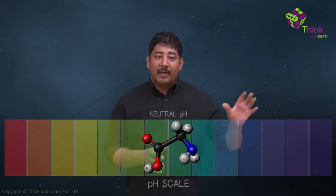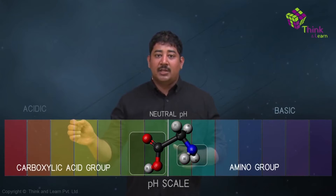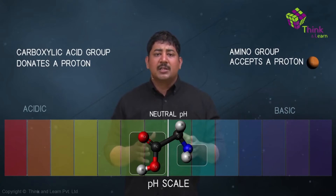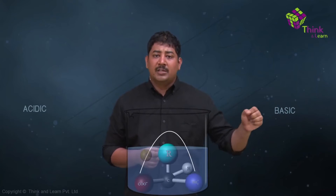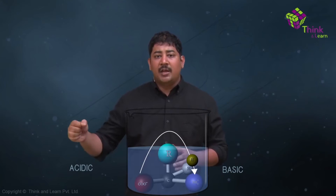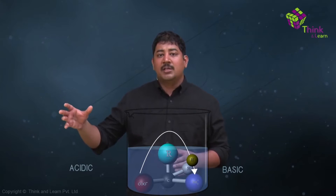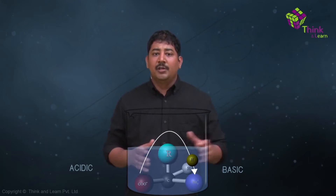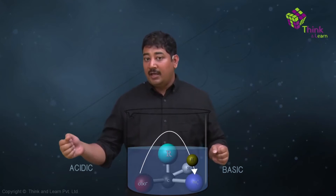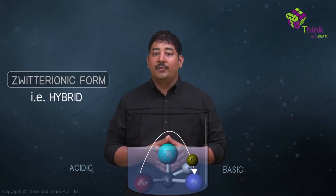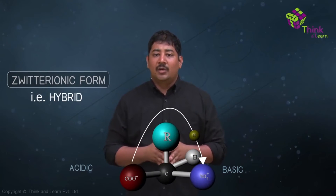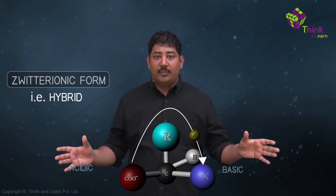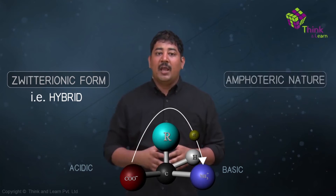At neutral pH, the amino group, which is basic, and the carboxylic acid group, which is acidic, like to accept a proton or donate a proton respectively. As a result, in amino acids that exist freely in solution, the amino group accepts a proton and acquires a positive charge, while the carboxylic acid group donates a proton and acquires a slight negative charge. This form of the amino acid, where the net charge is still zero but there are opposing positive and negative charges on the same molecule, is known as the zwitterionic form. In German, zwitter means hybrid, which is where the word comes from.